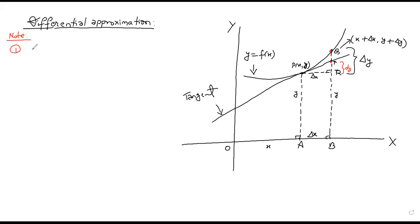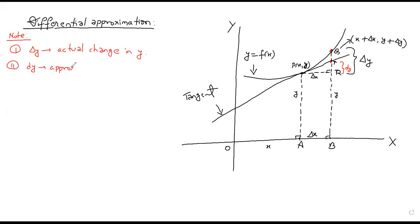Note number one: delta y is the actual change in y. Note number two: dy is the approximate change in y.